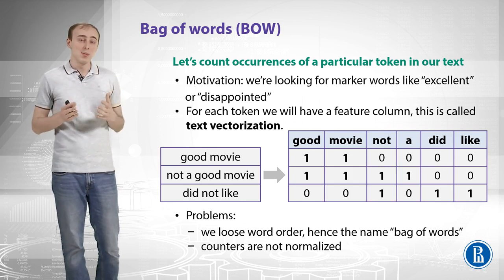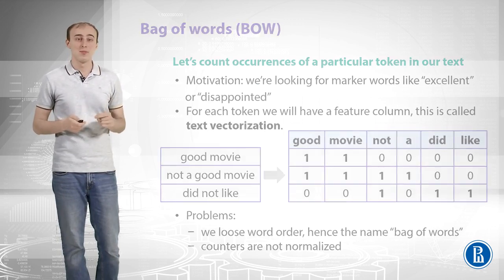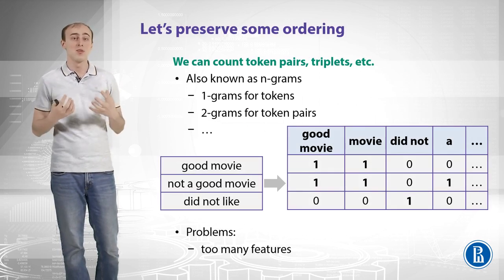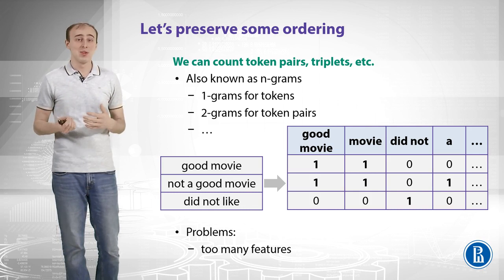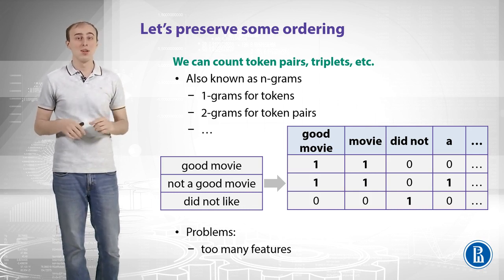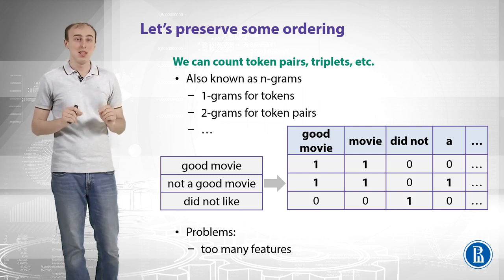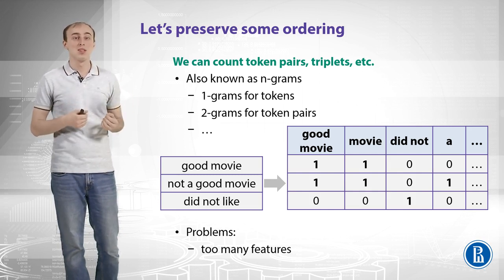A different problem is that counters are not normalized. Let's solve these two problems and start with preserving some ordering. You can easily come to an idea that you should look at token pairs, triplets, or different combinations. This approach is also called extracting n-grams. One-gram stands for tokens, two-gram stands for a token pair, and so forth.